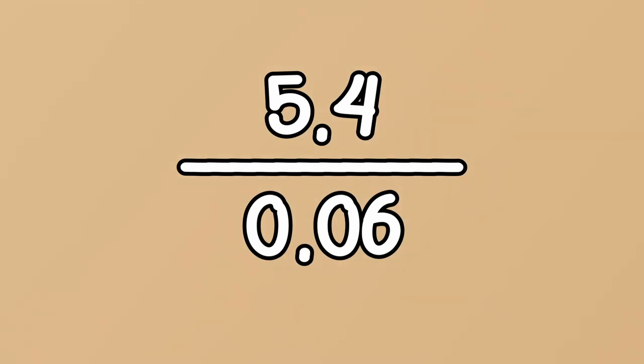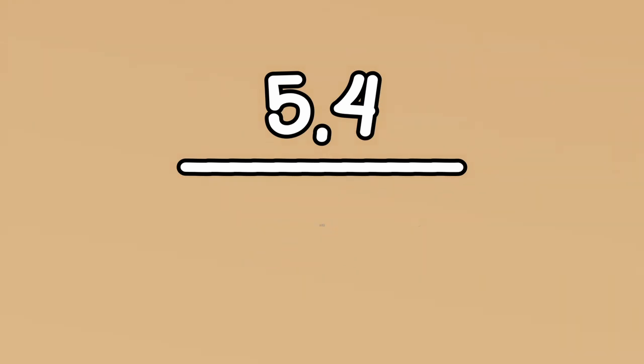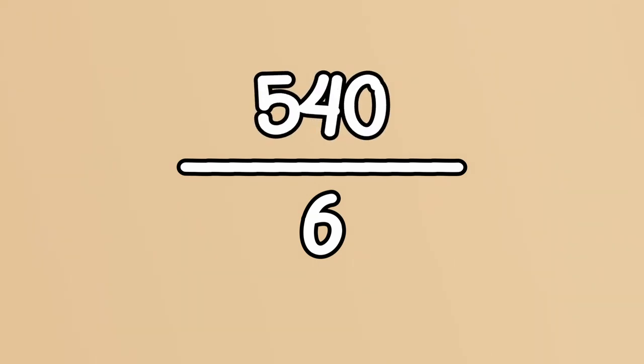I need that to be a whole number. So in order to make that whole number, I need to move the decimal point two spaces. That's the equivalent of timesing by 100. So whatever I do to that number, I'm going to do to the other one as well. So because I've done 5 times 0.06 by 100 to make it 6, I'm going to do 5.4 times 100 as well. And that becomes 540. I'm then left with 540 divided by 6, which is 90.